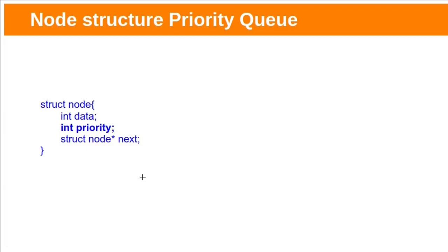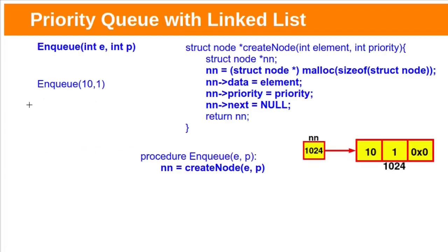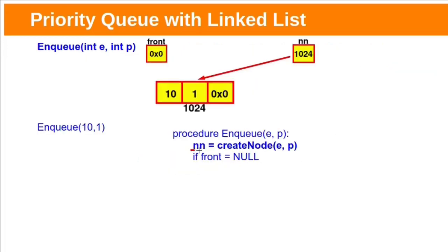In the linked list implementation of priority queue, the node structure will have three fields: data, priority, and a link to the next node. To add an element, we allocate memory dynamically on the heap. The createNode function allocates memory for a linked list node on the heap using malloc. The base address of the allocated memory is stored in the new node pointer. If we pass 10 as data and 1 as priority, those values are stored in the new node — data is 10 and priority is 1. Initially, the new node's next field will be null.